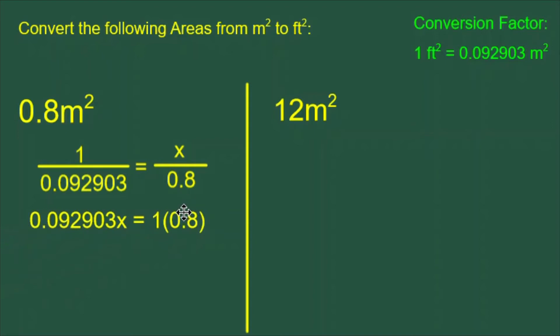Bottom times top equals top times bottom. 0.092903x equals 1 times 0.8. But of course, 1 times 0.8 is equal to 0.8. Now we have to isolate our x.